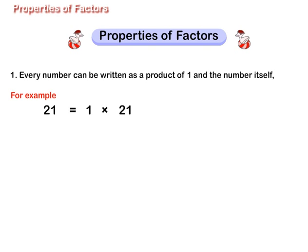For example, 21 is equal to 1 multiplied by 21. 36 is equal to 1 multiplied by 36. 43 is equal to 1 multiplied by 43.